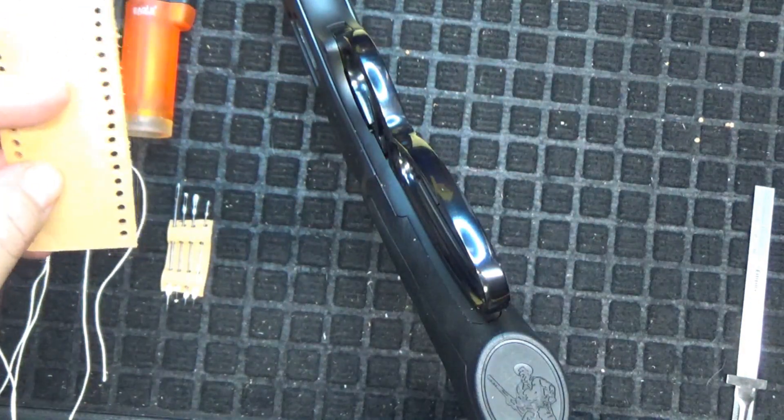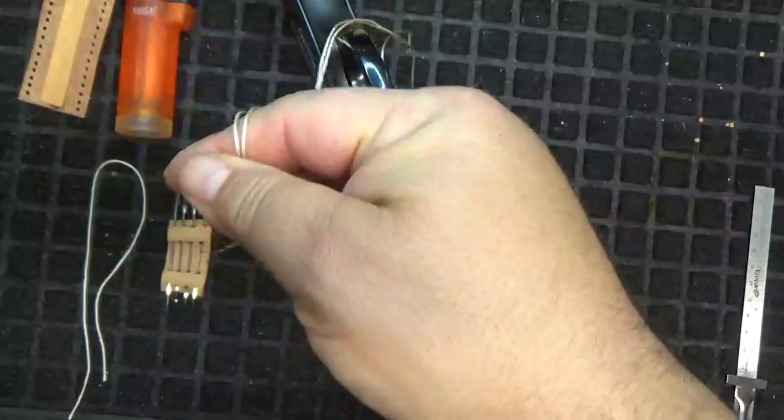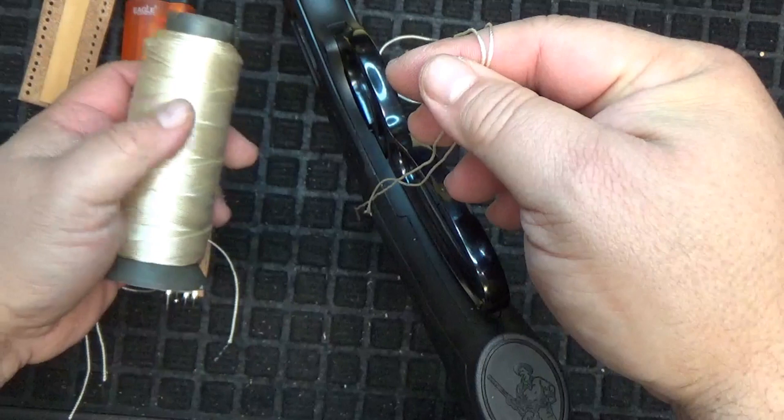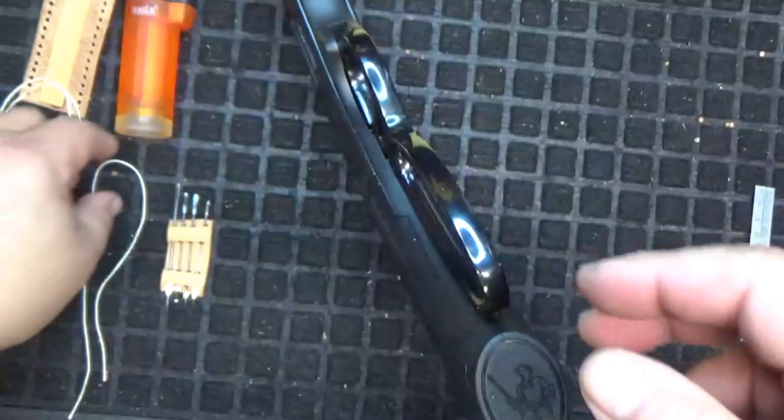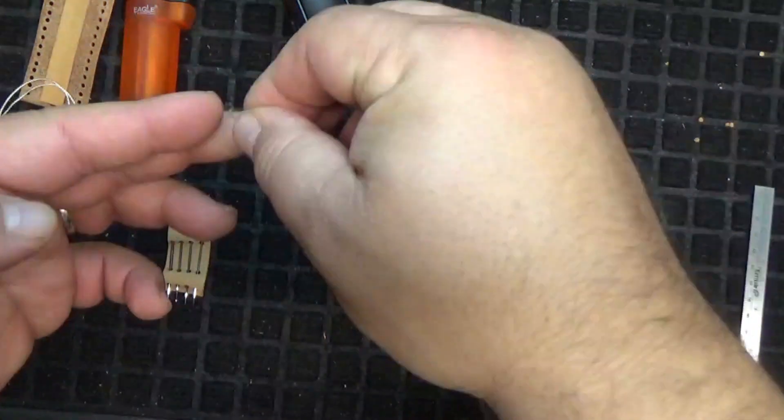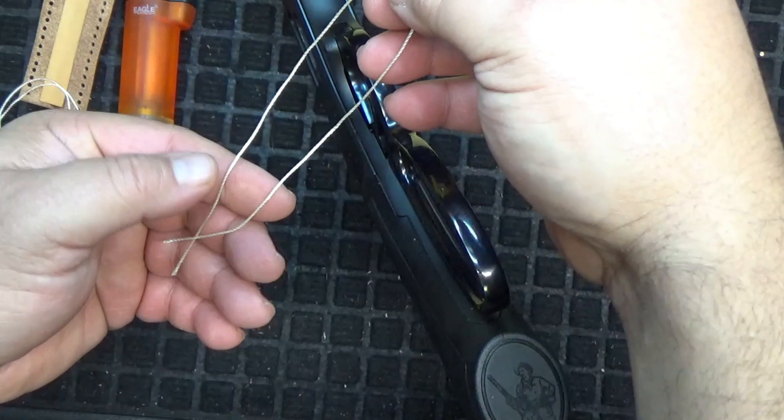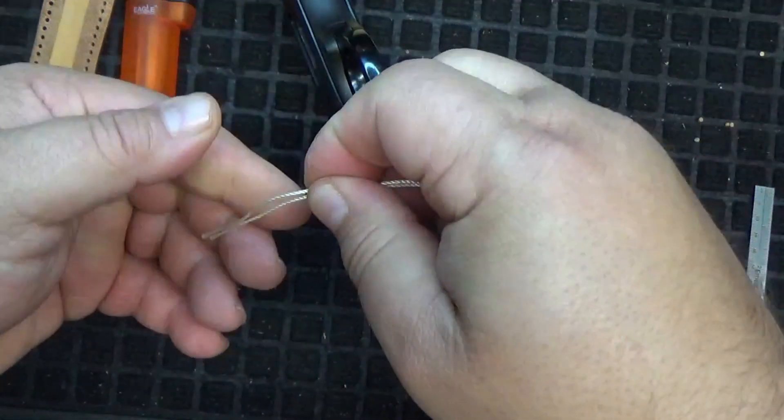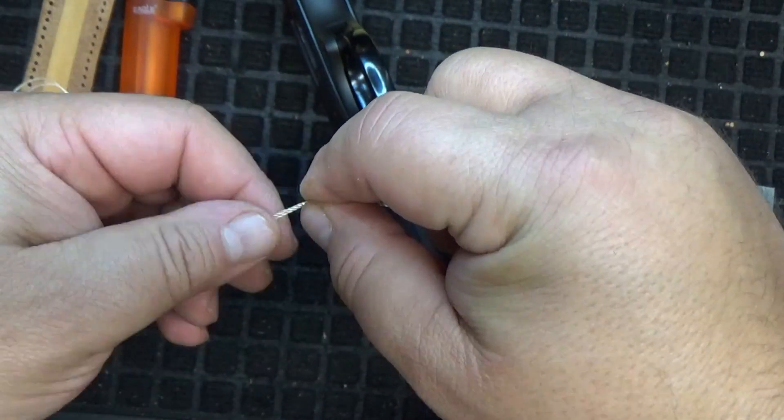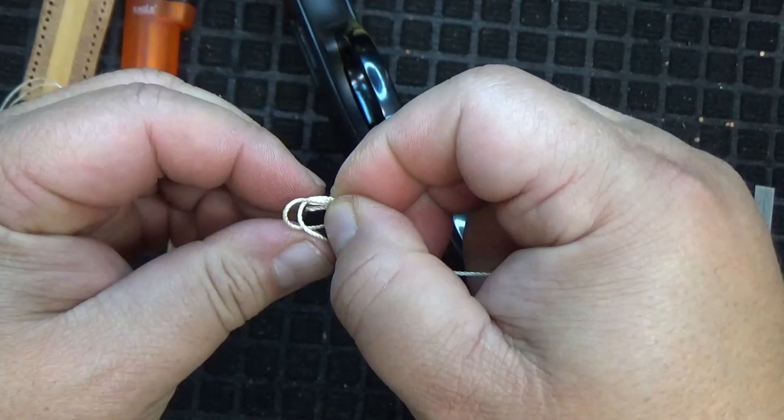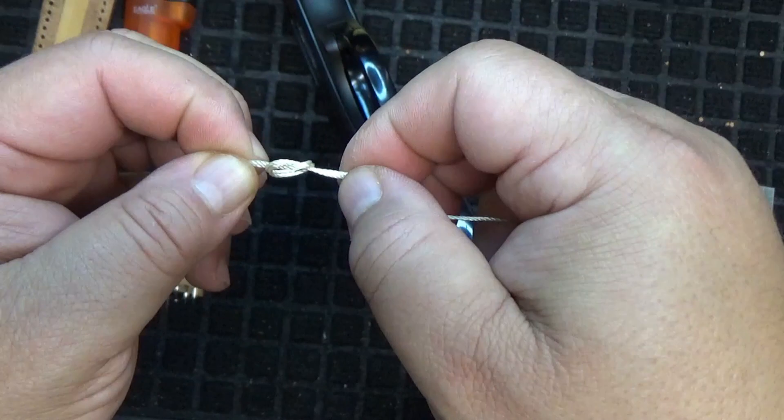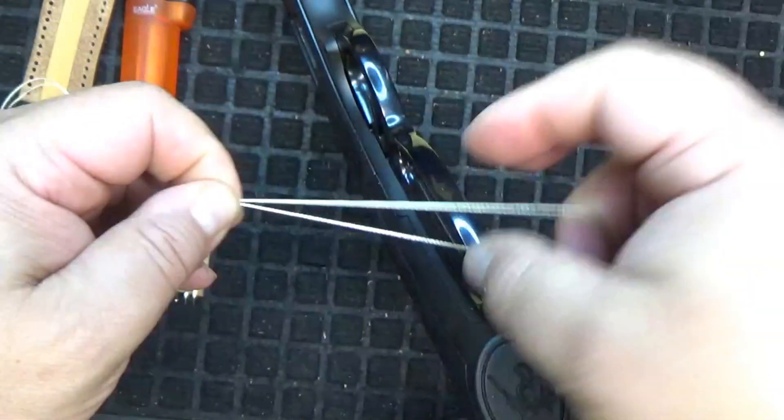You're going to need some string which I bought from Harbor Freight, this is the stuff they use for leather work or sail cloth. You'll need a piece about three feet long and another piece about twelve inches long. You tie a knot on one end of the twelve inch piece because you're going to need that to sneak some string halfway through the lever after you're done sewing.